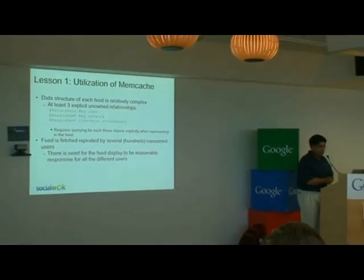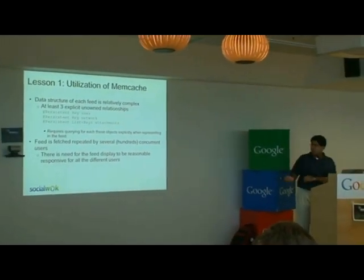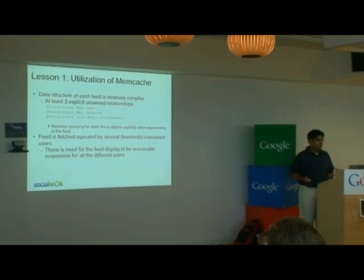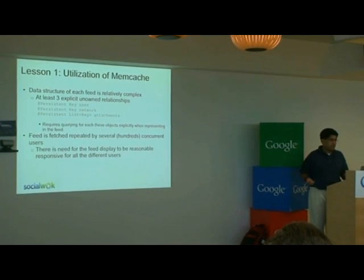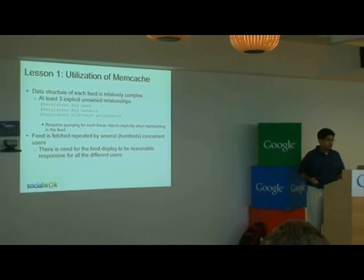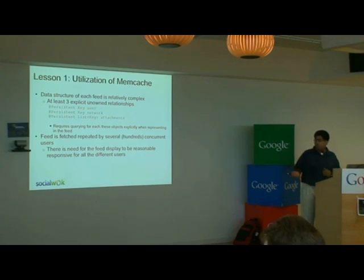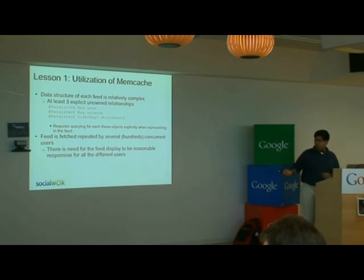So the first lesson: memcache. We basically came across this problem that we have a lot of unowned relationships. Every time we query for our feed, we have to fetch these associated objects every time because we can't store them as child entities, because of entity group restrictions or other limitations. Because we query these objects repeatedly by the same user and hundreds of users, there's a need for this to be very responsive.